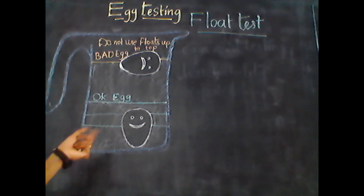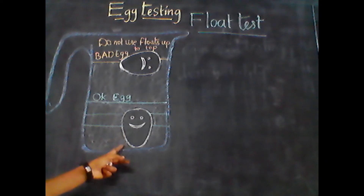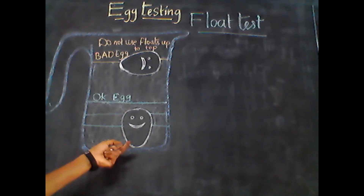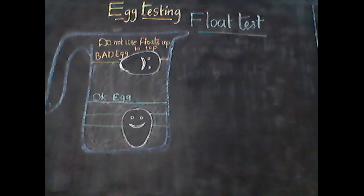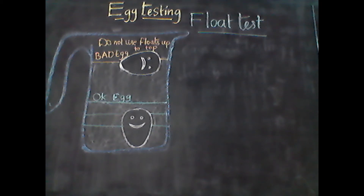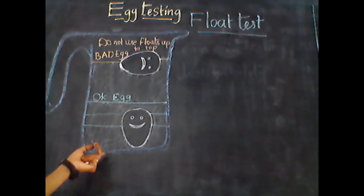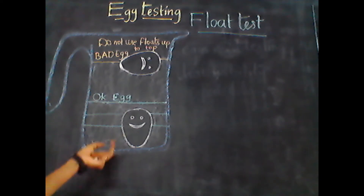Underdeveloped or unfertilized eggs will have a small or no air cavity inside, with no embryo development. These sink to the bottom totally and hence come under sinkers.